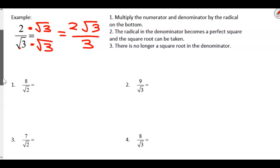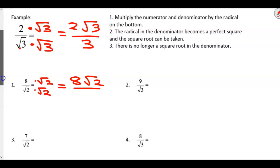On number 1, there is a square root of 2 on the bottom, and you cannot have that. So how do I get rid of the square root of 2 on the bottom? Times the same square root — and if I do it on the bottom, I do it on top. What's 8 times the square root of 2? A whole number and a square root — put them next to each other. They can't multiply because they're different. So 8 times the square root of 2 is 8 square root of 2. Over — on the bottom, square root of 2 times square root of 2 is just 2.